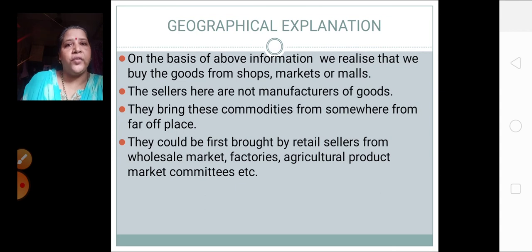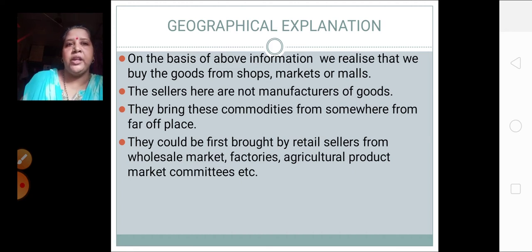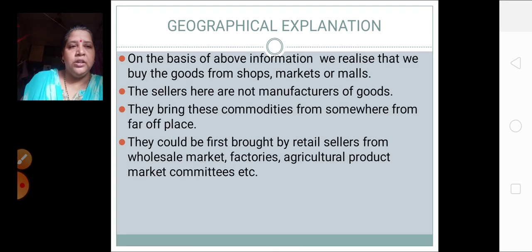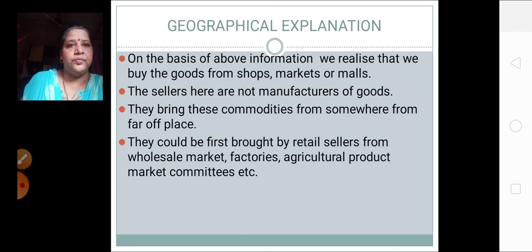Now let's have a geographical explanation of what we have done in the activity. On the basis of the above information, we realize that we buy the goods from shops, malls, and markets. The sellers are not manufacturers of goods. Wherever the things are sold, they are not manufactured there — they are just the sellers.